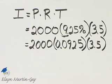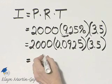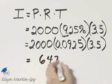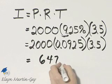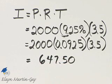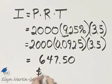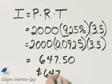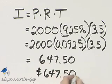If you multiply, and you'll need to go off to the side to do that, you'll find that your result is 647.50. What does that mean in the context of this problem? That means your interest will be $647.50.